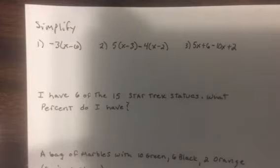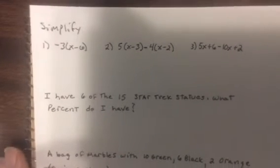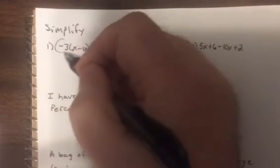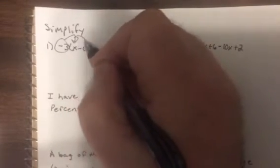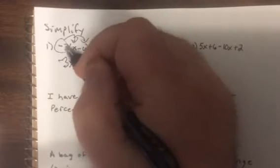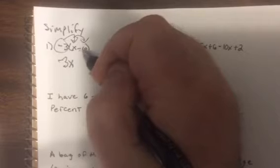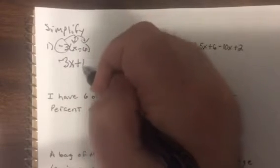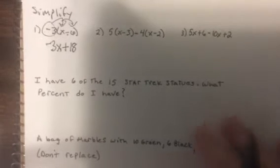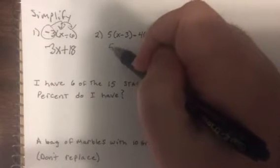Let's do distributive property. This goes to both terms, so that'd be minus 3x, negative 3 times minus 6 minus minus plus 18.